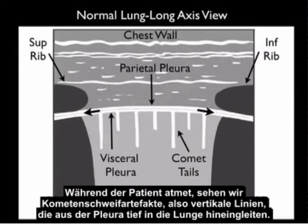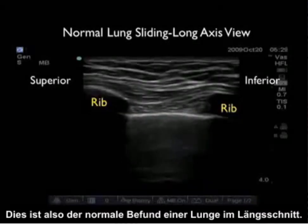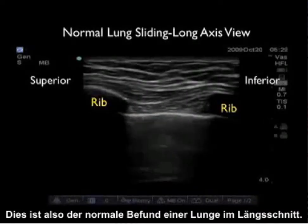And as the patient breathes, we can see white comet tails — vertical lines coming off the pleura down deep into the lung. That will be the normal finding of a lung on long axis configuration.